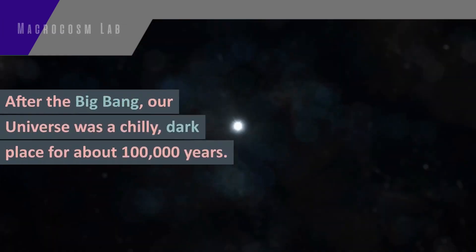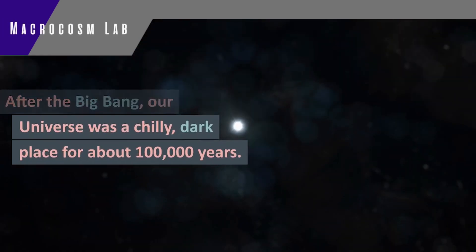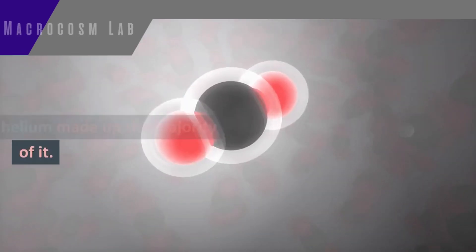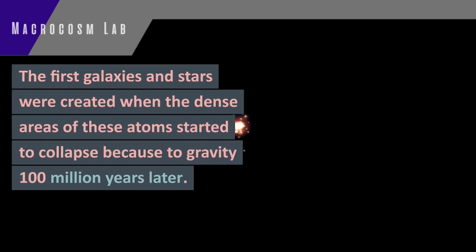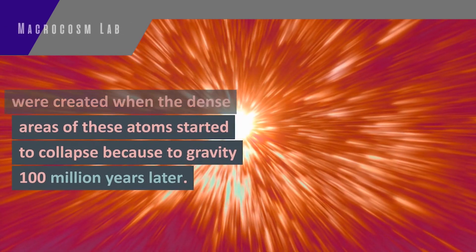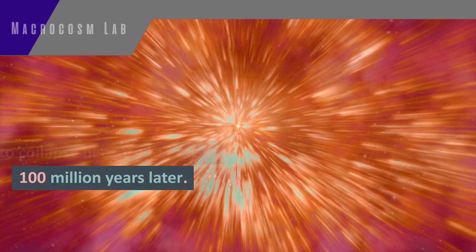Let's investigate. After the Big Bang, our universe was a chilly, dark place for about 100,000 years. Atoms of hydrogen and helium made up the majority of it. The first galaxies and stars were created when dense areas of these atoms collapsed due to gravity 100 million years later.